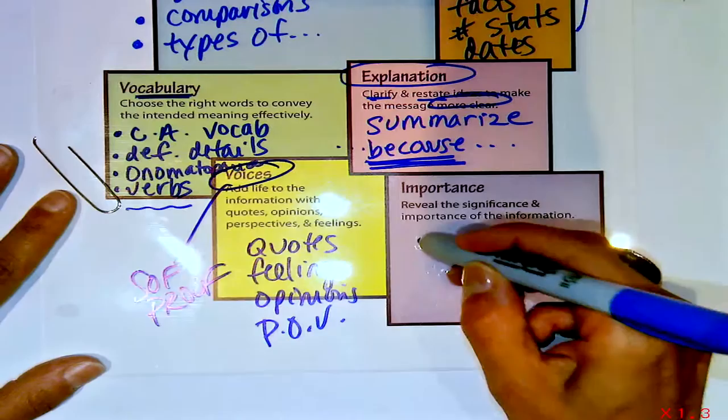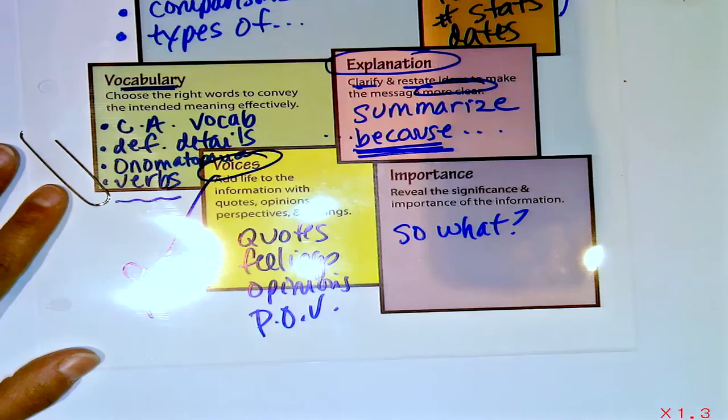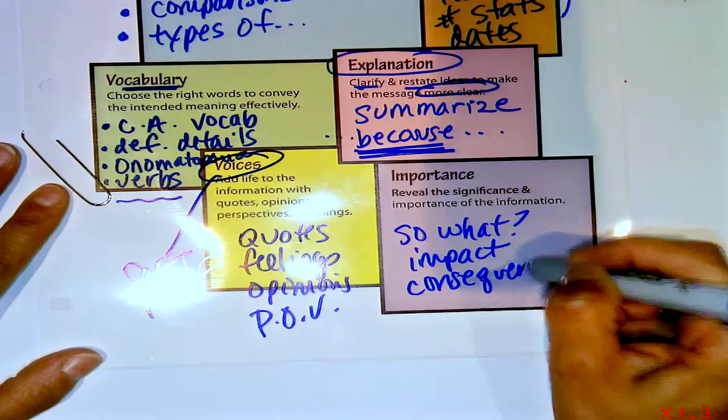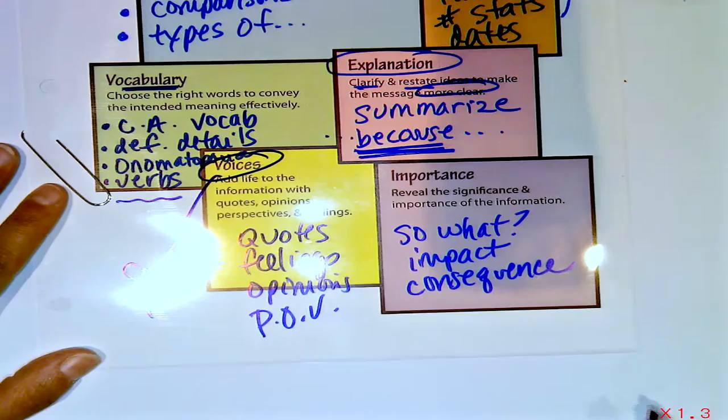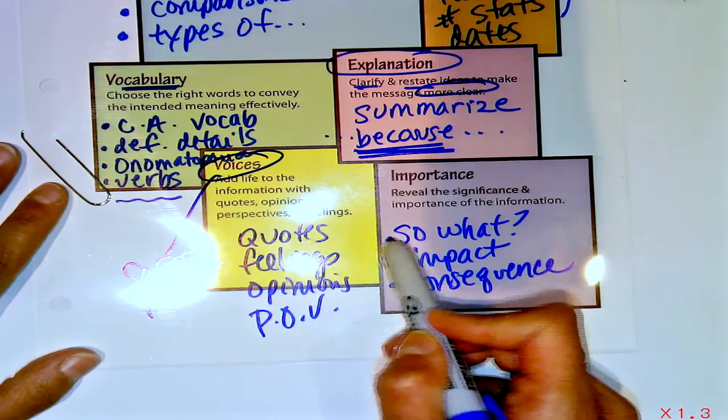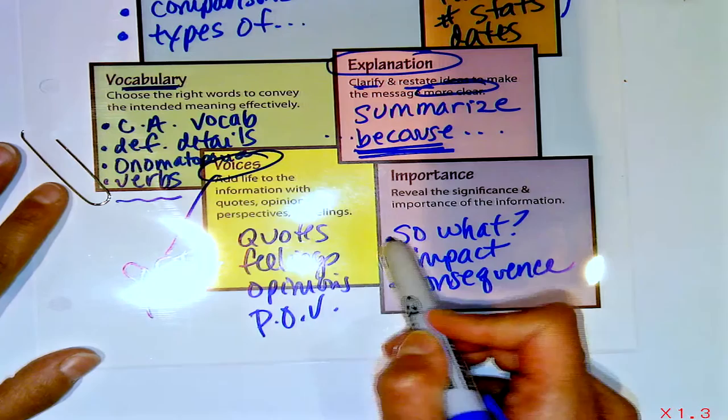You can add sentences by answering this question: so what? Who cares? What's your point? What's the impact? What's the consequence? What's the significance of this reason, this detail, this facet that you're describing? So what? That happened — big deal. What's the consequence? You can add a lot of sentences that way. I believe all six of these fit all grade levels. What I wrote in marker may be a little different depending on your grade level, but I think we can all teach all of the types.